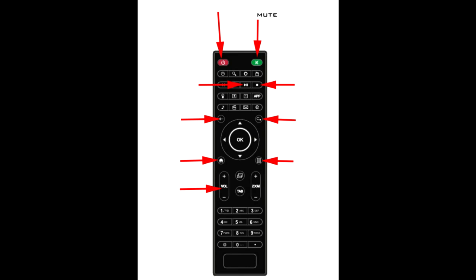The mute button turns off the volume on the playback of streams temporarily and back on again. The home or desktop button is used to go immediately to the desktop of StreamBox — this doesn't actually quit StreamBox but takes you back to the desktop of the machine. The backspace button is used to go back a number of spaces during the input of text.